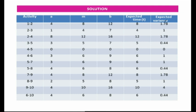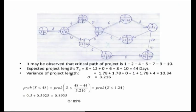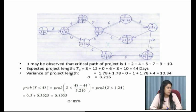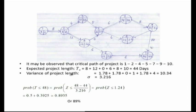To answer the remaining questions, here is the network diagram. With the help of this network, we observe that the critical path of this project is 1-2-4-5-7-9-10. We can confirm this by looking at the earliest and latest times associated with all these activities — they are the same: for example, (1,2) gives 8, 8; (2,4) gives 20, 20; and so on. The expected project length is the sum of all activity durations lying on the critical path.